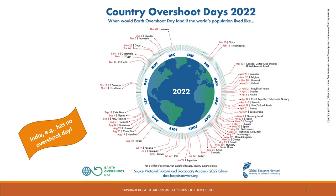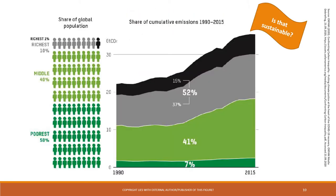As a whole planet, Earth's overshoot day usually falls sometime in July or August, meaning that as humankind in general we do overuse the Earth's capacities by quite a bit. Looking within countries, some people use more and some use less resources. For example, the accumulated carbon emissions of mankind by income show that the richest 10% are accountable for 52% of global carbon emissions, while the poorest 50% of the Earth's population account for only 7%.